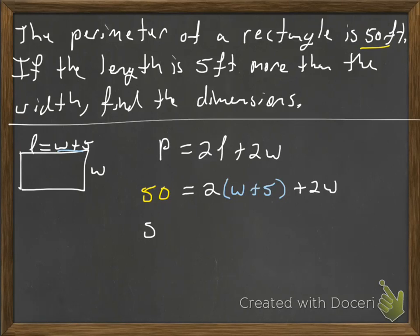Okay, so kind of the first thing we do with solving equations, distributive property, combine like terms, then clear any fractions. I don't have any fractions, so that's good for us. But I'm going to do the distributive property, so 2 times w, 2w, 2 times 5 is 10, plus 2w.